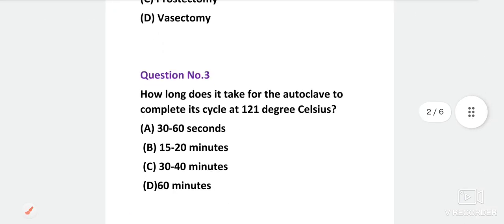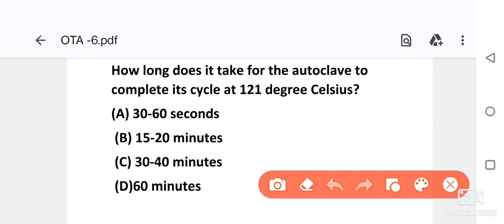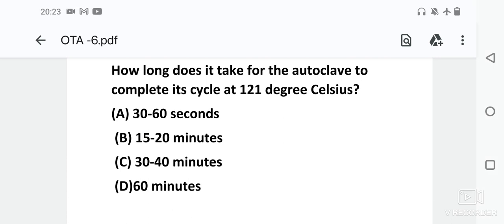Next, how long does it take for the autoclave to complete its cycle at 121 degrees Celsius? Options are 30 to 60 seconds, 15 to 20 minutes, 30 to 40 minutes or 60 minutes. Tell us about the right option in the comment box. The right answer is 15 to 20 minutes.